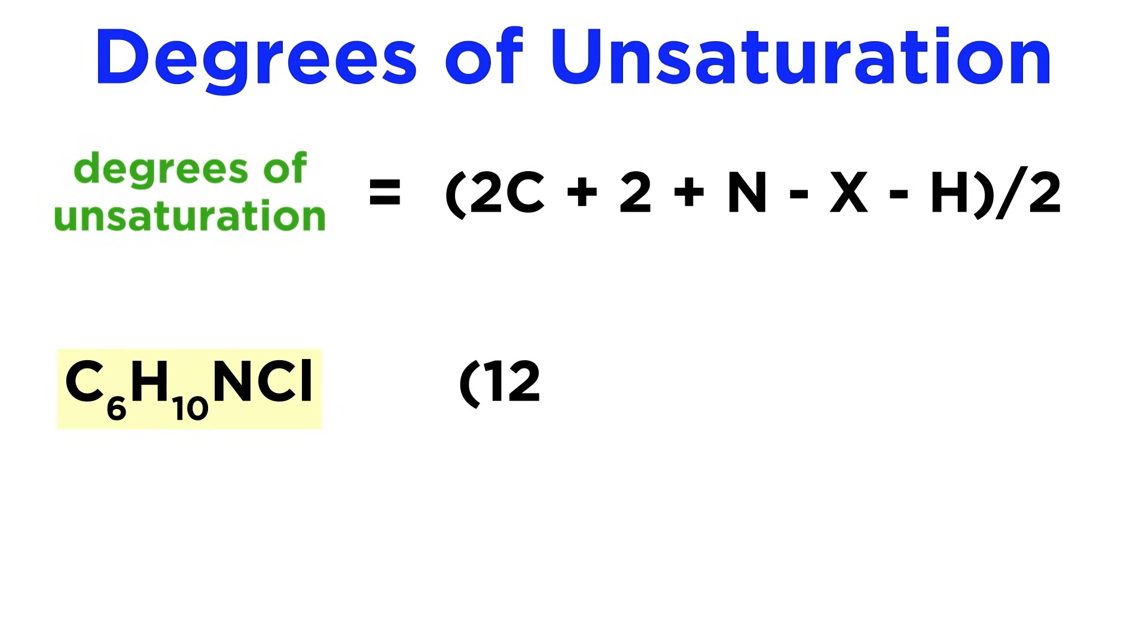Well, twice the number of carbons is twelve, plus two, plus the one nitrogen, minus the one halogen, minus ten hydrogens, all over two. So that's four over two, which is equal to two.